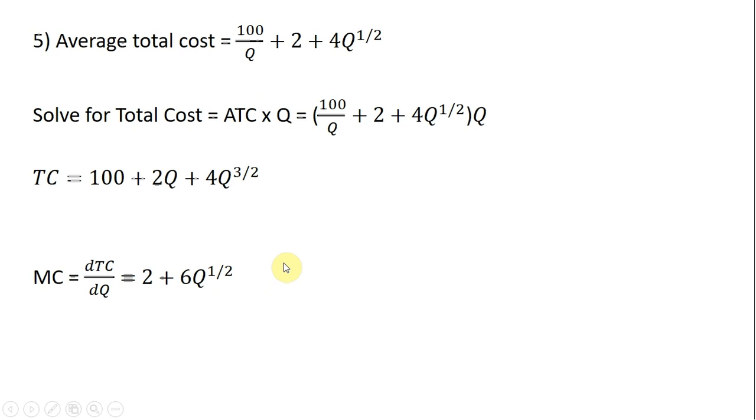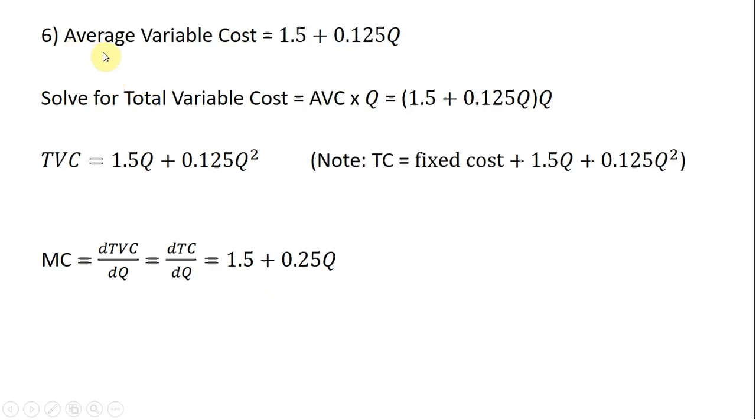And one more example. This time we're given average variable cost. We've got an average variable cost equation of 1.5 plus 0.125Q. Like the last example, we need to get total variable cost. We can get total variable cost by multiplying average variable cost through by Q. So again, a similar technique that we used in our last example. Average variable cost is in parentheses, multiplying that through by Q, we get our total variable cost equation.